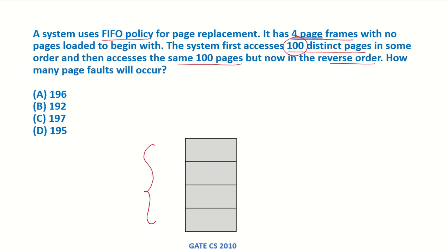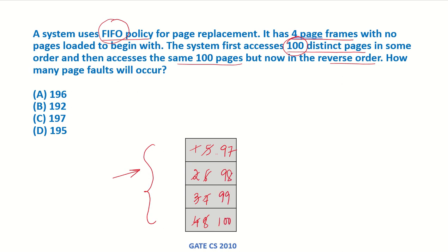There are 100 distinct pages which are loaded into memory that has just 4 page frames. First page 1 will be loaded, then 2, then 3, then 4, and then when page 5 has to be loaded, since FIFO is being followed, page 1 will be replaced by 5, then 6, 7, 8, and so on. At every time a new page comes in, there is going to be a page fault, and in the end we will have pages 97, 98, 99, and 100 in memory.